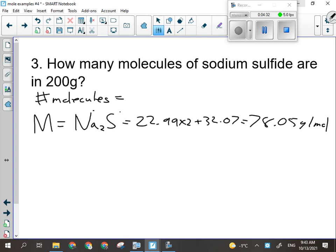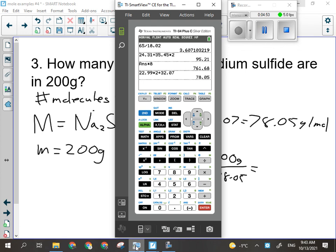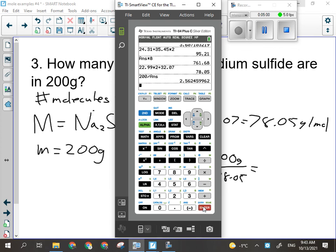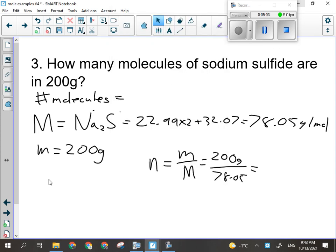All right, and the other thing they tell us is little m, 200 grams. So right now I have big M and little m, which means I can find the number of moles. So 200 grams divided by 78.05 will tell me the number of moles. I'm taking the grams I have and dividing it by the mass of one mole. So 2.56 moles. Remember, I'm going to keep all those decimals in my calculator though until I'm all done.